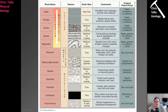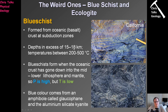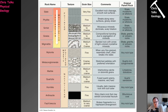We've discussed slates, phyllites, schists, gneisses and migmatites, marbles, quartzites — and I should correct myself: I meant hornfels and amphibolites. The other types are of lesser concern to us.